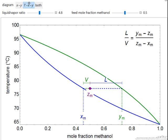It's a little easier to visualize this if we look at this diagram. We're fixing the feed composition, in this case 0.5, this is a methanol-water mixture, and then we're specifying the liquid to vapor ratio, and that fixes the L and V values.